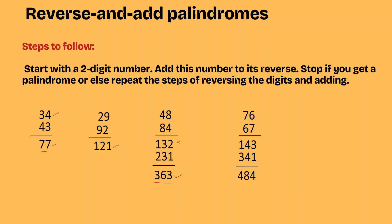Let us take a fourth example: 76. The reverse of 76 is 67. Upon addition of 67 and 76, we get 143. What is the reverse of 143? It is 341. Upon addition of 143 and 341, we get the palindrome 484.